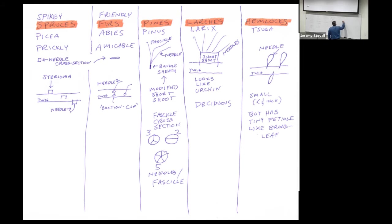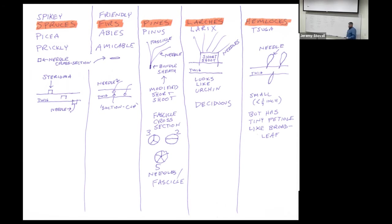Hemlocks are in the genus Tsuga. With hemlocks, the needle has a tiny little petiole and then a tiny blade — all very small, less than a quarter of an inch. It does look like a gymnosperm needle, but if you look closely it actually looks like just a miniature version of a broad leaf. That's how you tell those apart. All of these are in the Pinaceae family.